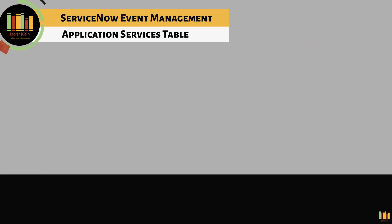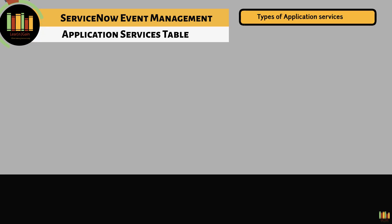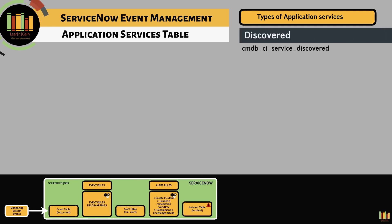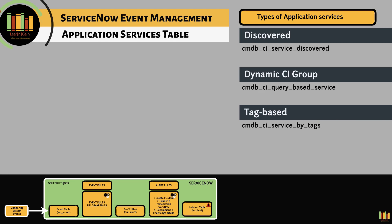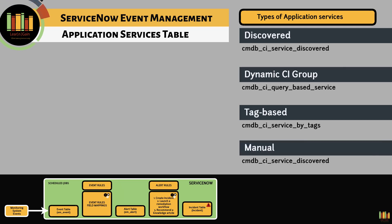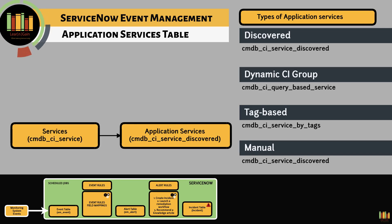Another important table is the application services table. Depending on the type of application services, they reside among the following tables: Cmdb-Ci-Service-Discovered (Dynamic), Cigroup-Cmdb-Ci-Qquery-Base-Service (Tag-based), Cmdb-Ci-Service-By-Tags, and Manual CMDB — Cmdb-Ci-Service-Discovered. The Cmdb-Ci-Service-Discovered table is an extension of the services table Cmdb-Ci-Service.